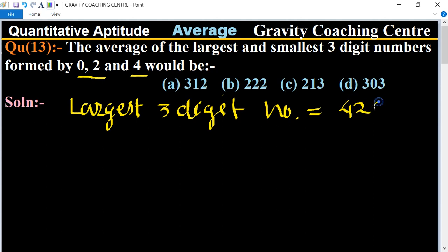And the smallest three-digit number equals 204. Now we need to find their average.